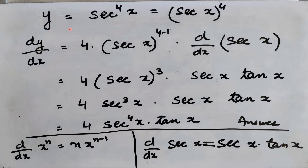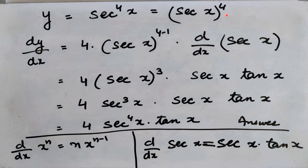Next, y equals sec⁴(x). As mentioned earlier, if it is sec⁴, then you can extend it into a whole bracket: sec⁴(x) can be written as (sec x)⁴. Now finding dy/dx for y = (sec x)⁴, differentiating both sides with respect to x. The formula used is d/dx of xⁿ = n·xⁿ⁻¹. Wherever x is written in the formula, use sec(x). So 4 comes to the front: 4·(sec x)⁴⁻¹, multiplied by whatever is in the bracket, which gets differentiated again.